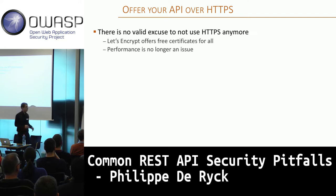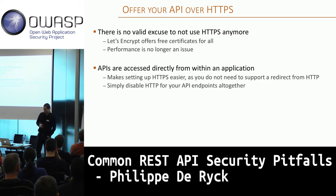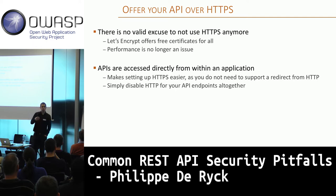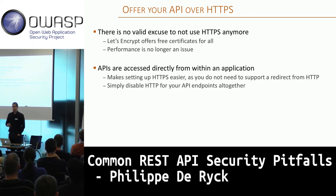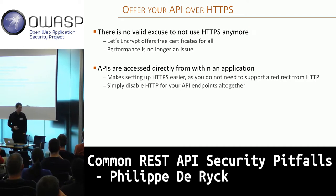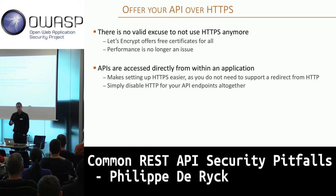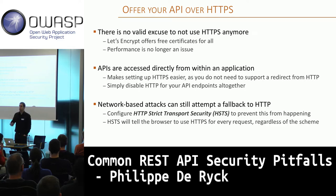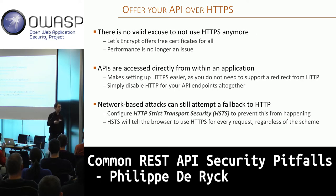A few guidelines for APIs. First, there's no excuse not to use HTTPS. Second, APIs are often accessed directly — an XHR object sends a request to an endpoint — so there's no general need to support redirects from HTTP. It's a potential security hole. And if your API runs on a domain that hosts nothing else that should be accessed by typing a URL in the browser, there's no actual need to support HTTP at all.